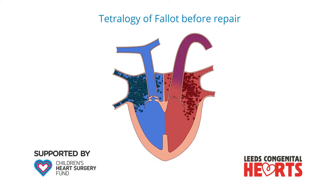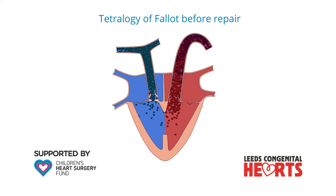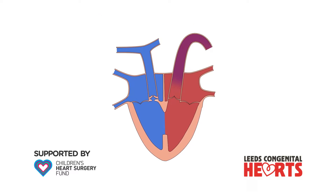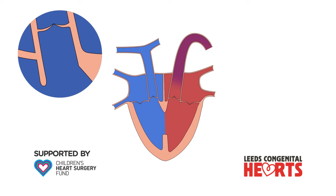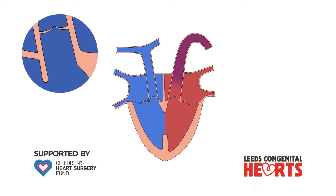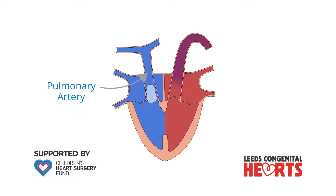Exactly what is required to reduce the obstruction to blood being pumped to the lungs depends on where the obstruction is in an individual patient. Any excess heart muscle under the pulmonary valve is removed. It may be possible to improve the function of the pulmonary valve so that it opens more effectively. The pulmonary valve and pulmonary artery may need to be enlarged, and this is achieved by sewing in a patch of material over the valve and into the pulmonary artery.